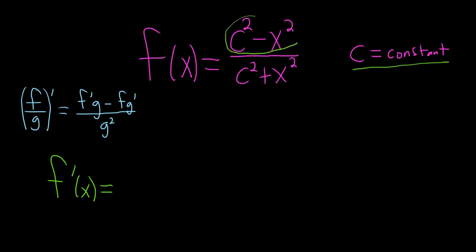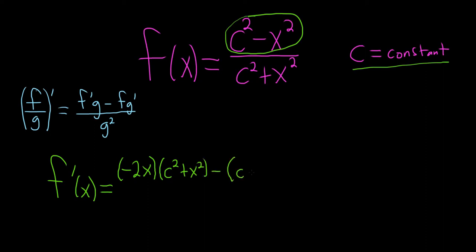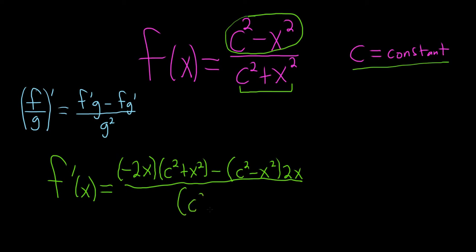We're going to start by taking the derivative of the top. The derivative of c squared is 0 because it's a constant. The derivative of negative x squared is negative 2x. This is the derivative of the top times the bottom, minus the top times the derivative of the bottom. When taking the derivative of the bottom, the derivative of c squared is 0 and the derivative of x squared is 2x, all divided by the bottom piece squared — c squared plus x squared, the whole thing squared.